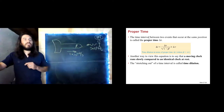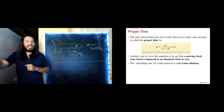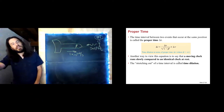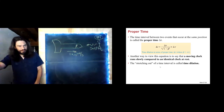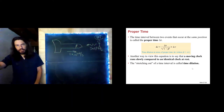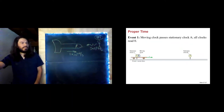Another way to say this is that a moving clock runs slowly compared to an identical clock at rest. This stretching out of time we call time dilation. Let's look at a quick example.